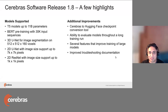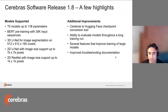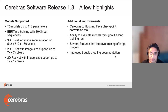We recently had a software release, so I wanted to share a few highlights. We do have expanded model support: T5 models up to 11 billion parameters, BERT can be trained or pre-trained with a 30,000 token input sequence. We've also made improvements to our CV model support — 3D U-Net for image segmentation, 2D U-Net with 50 megapixel image size support, and 2D ResNet with 1K by 1K pixels.